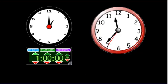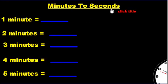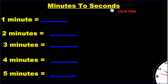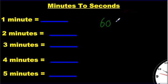Let's see how we can use this information to help us solve problems. Minutes to seconds — here's what I want you to remember: 60 seconds in one minute. We have 60 seconds — I'm going to write it down — 60 seconds equals one minute.